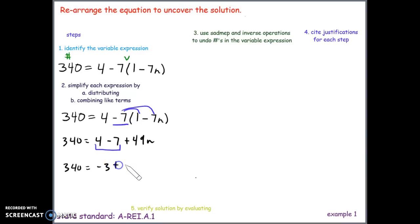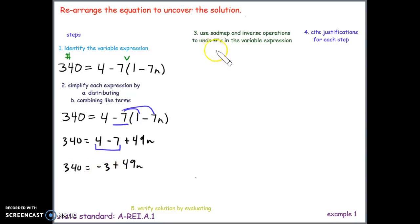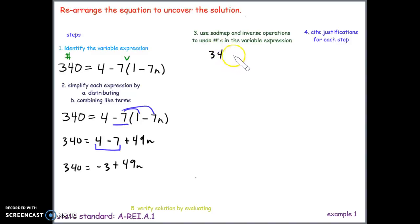So we now have 340 equals negative 3 plus 49n. Both expressions are fully simplified. Now we move to step 3: use SADMEP and inverse operations to undo the numbers on the variable side. We've got negative 3 and 49. We start by eliminating things that are being added or subtracted.